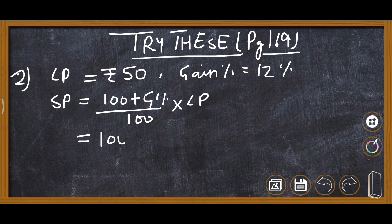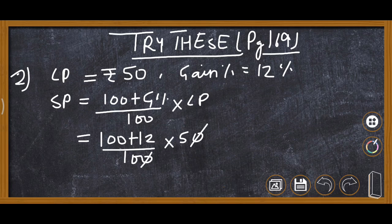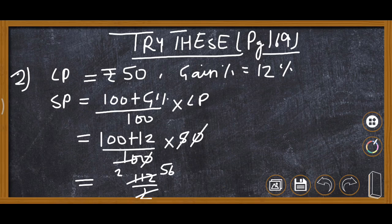Applying the formula: SP = (100 plus 12) upon 100, multiplied by 50. That is 112 upon 100 multiplied by 50. The zero reduces with zero, giving 112 upon 2, and 5 twos are 10, so it becomes 56. The selling price is rupees 56.